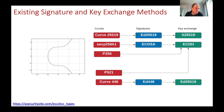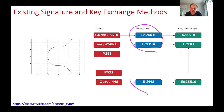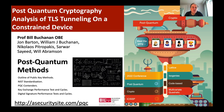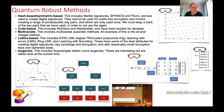The methods we see include Curve25519, secp256k1, and P-256. These produce the standard signature methods and key exchange methods we currently use, but these are all vulnerable to quantum computers.